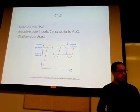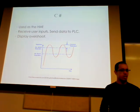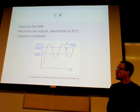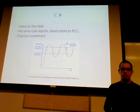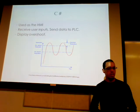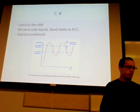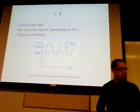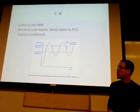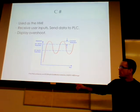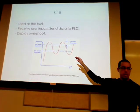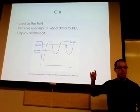C-Sharp, which you guys will probably get introduced to in MAT311, is going to be used as my HMI, which is a human machine interface. The user is going to input their setpoint and that is going to be sent to the PLC. Then I want to display the overshoot. The overshoot is simply the difference between your desired temperature and your actual temperature.